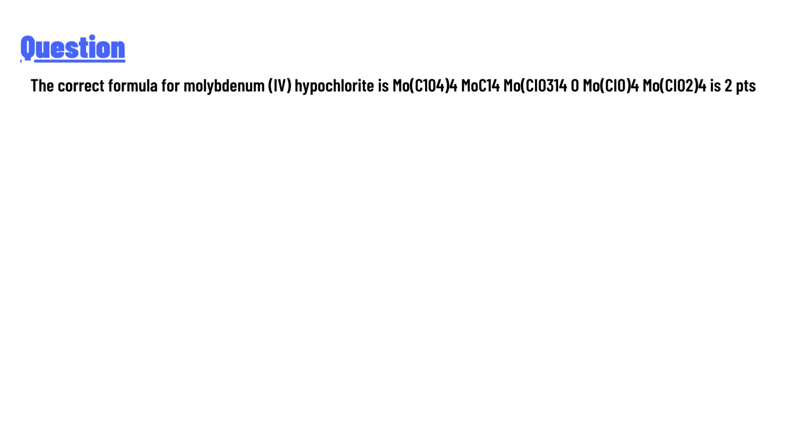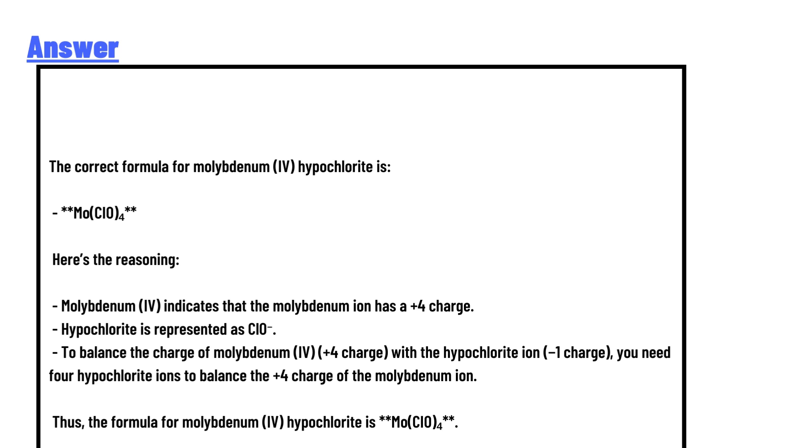The answer to the question is: the correct formula for molybdenum hypochlorite is Mo(ClO)4.